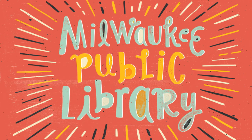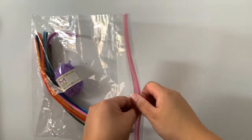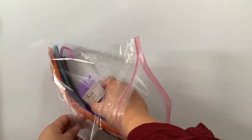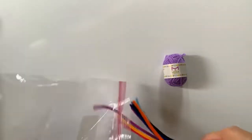Welcome to the Milwaukee Public Library Makerspace at Home Edition. Today's project is basket weaving. In your take and make kit you'll find all the materials you need to get started.